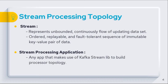A stream is the most important abstraction provided by Kafka Streams. It represents an unbounded, continuous flow of an updating dataset. It is an ordered, replayable, and fault-tolerant sequence of immutable key-value pair data — key and value because Kafka stores data in the form of key and value. A stream processing application is any program or application that makes use of the Kafka Streams library to build a processor topology.